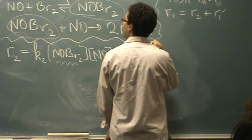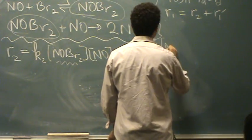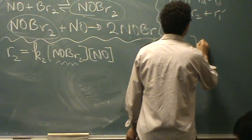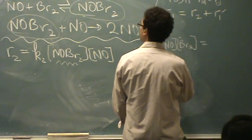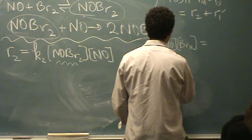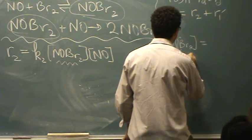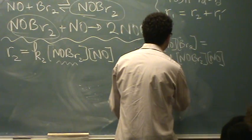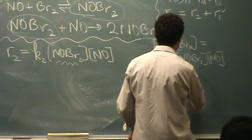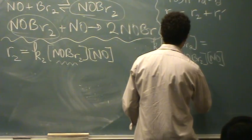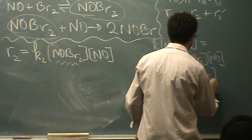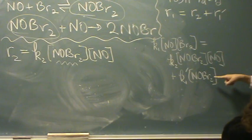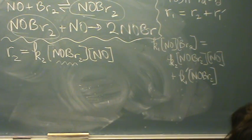Let me do it down here. Rate 1 equals K1 times NO times BR2. That equals rate 2, which is K2 NOBr2 times NO plus rate 1 reverse, K1 prime times NOBr2. See what I did? I have rate 1 equals rate 2 plus rate 1 reverse. I just plugged in the rates accordingly.